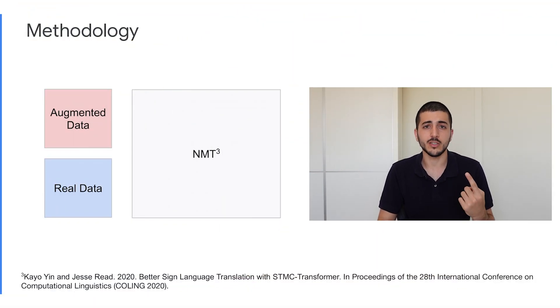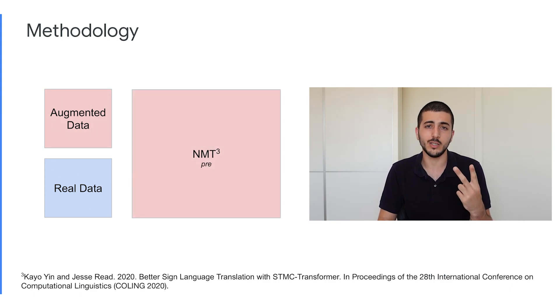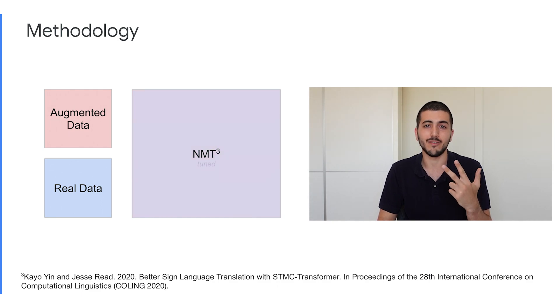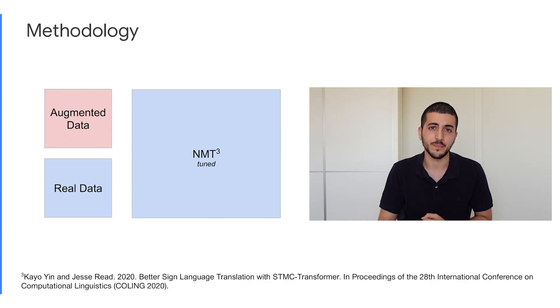Given our augmented data and our real data, we perform the following training procedure. First, we train a neural machine translation model on the augmented data. Then, we fine-tune this model on both the augmented data and the real data, sampled 50-50, and finally, we fine-tune this model only on the real data.